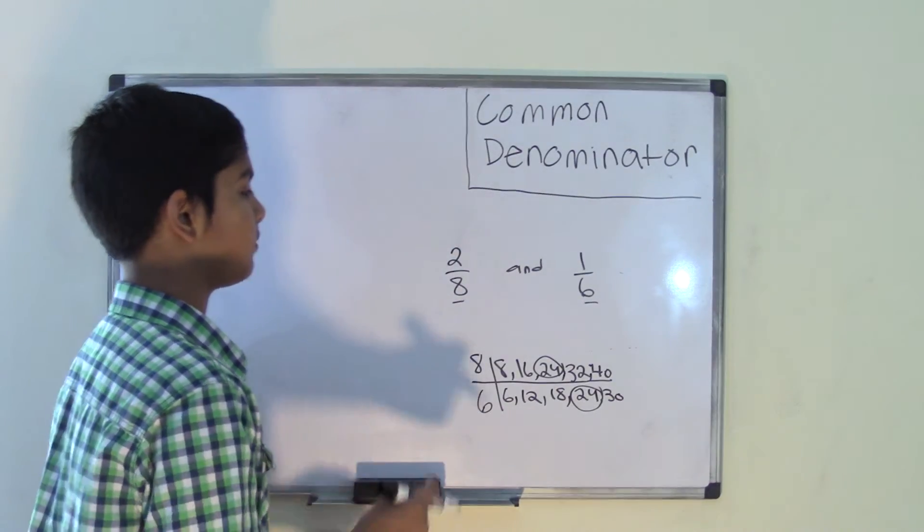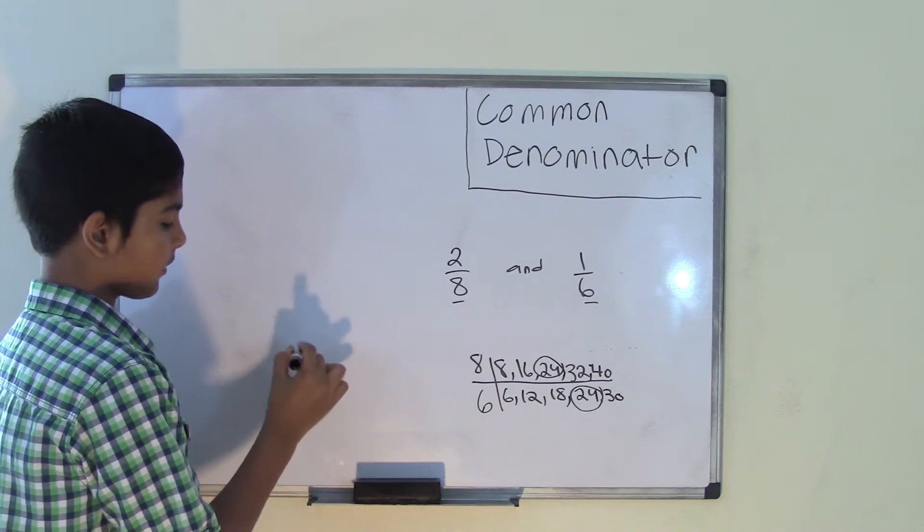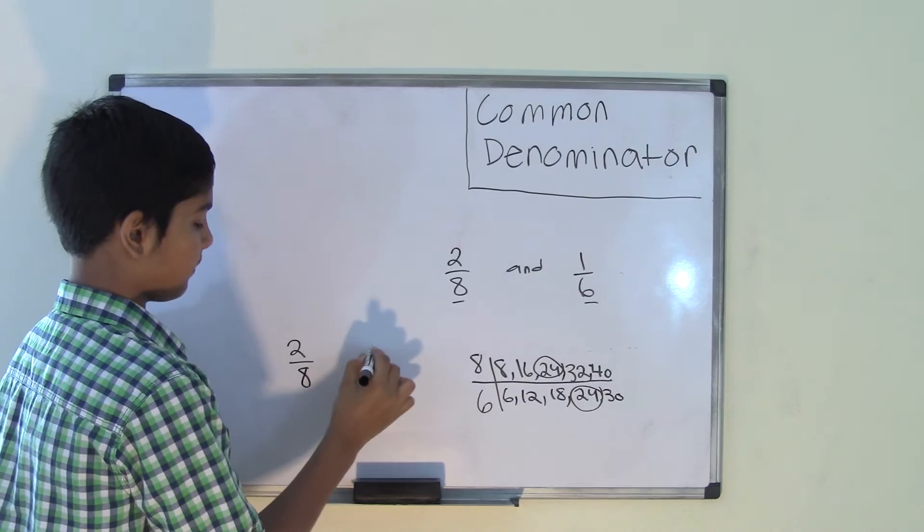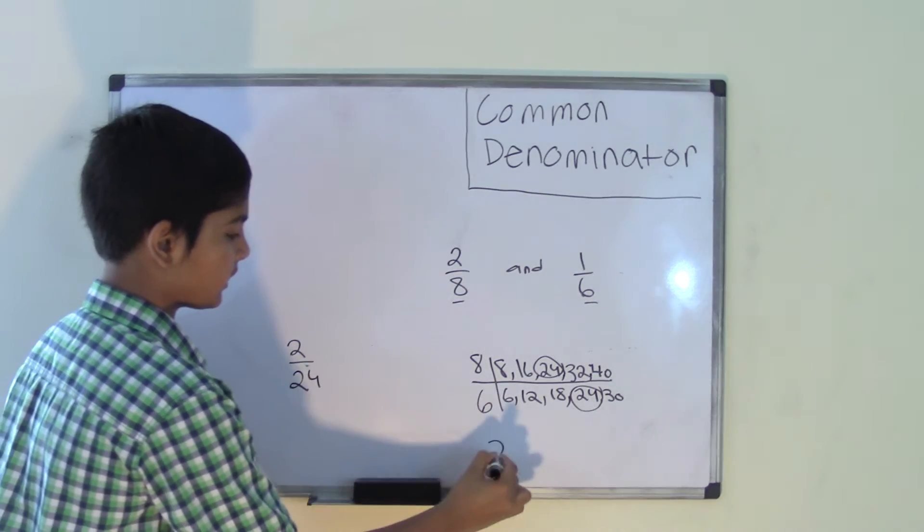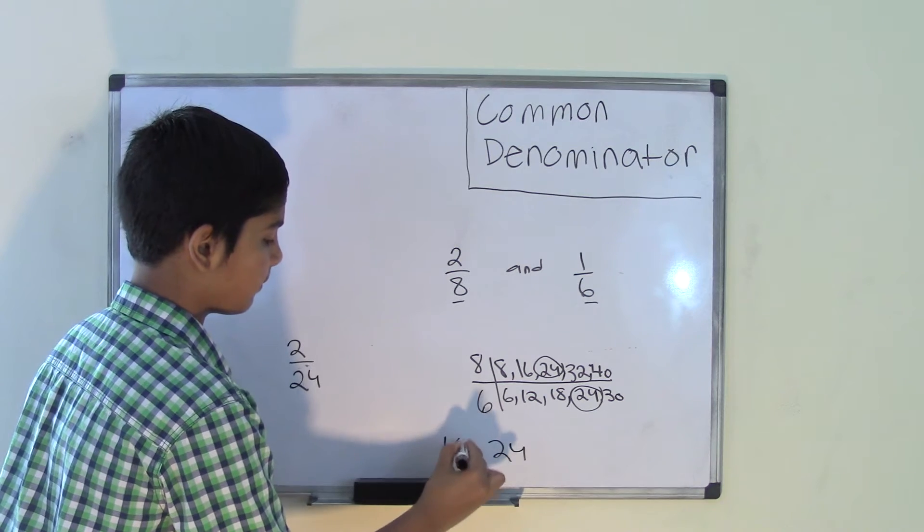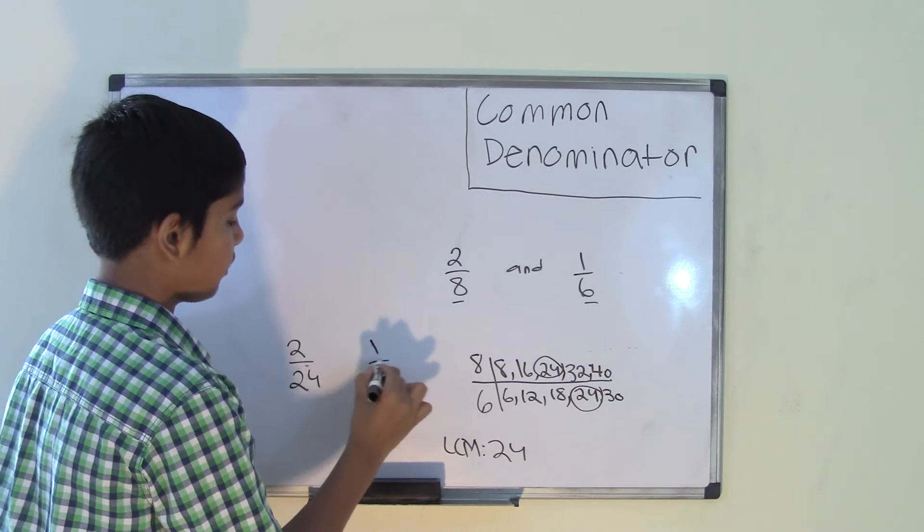Now we have the LCM. We can rename these two fractions. So now we can say 2 over 24, since 24 is the LCM, and 1 over 24.